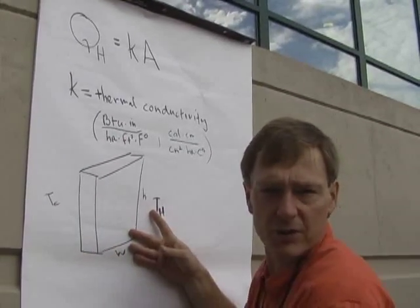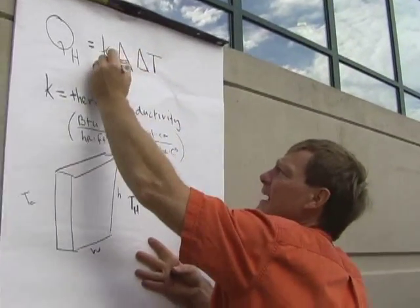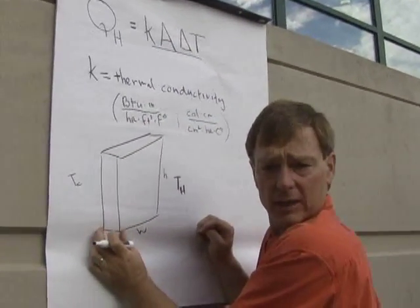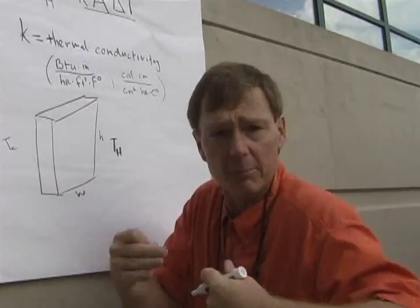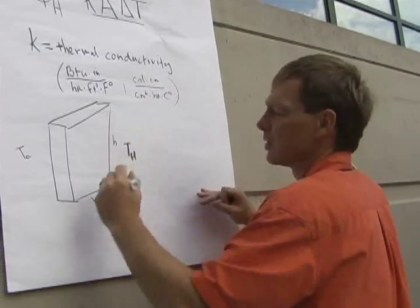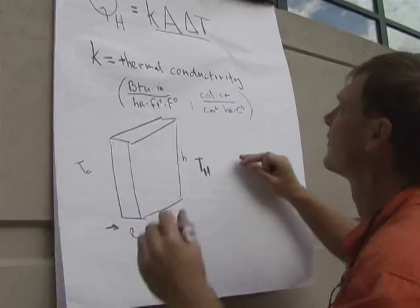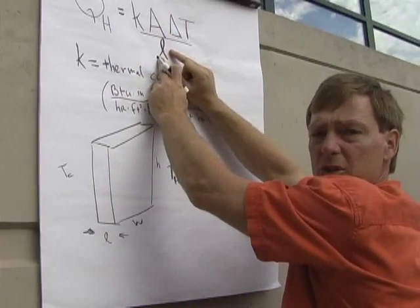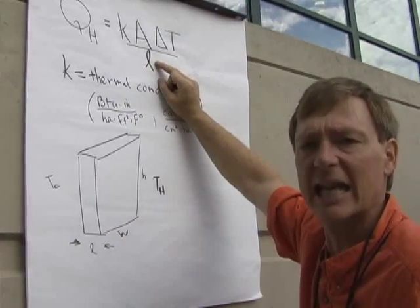The temperature difference drives the heat transfer rate directly proportionally — if I double the temperature difference, I double the heat transfer rate. The thicker the material, the lower the heat transfer rate. If I'm cold, I put on another layer, making a bigger barrier between my body temperature and the outside. L is the thickness, and it is inversely proportional to the heat transfer rate — double the thickness, cut the heat transfer rate in half.